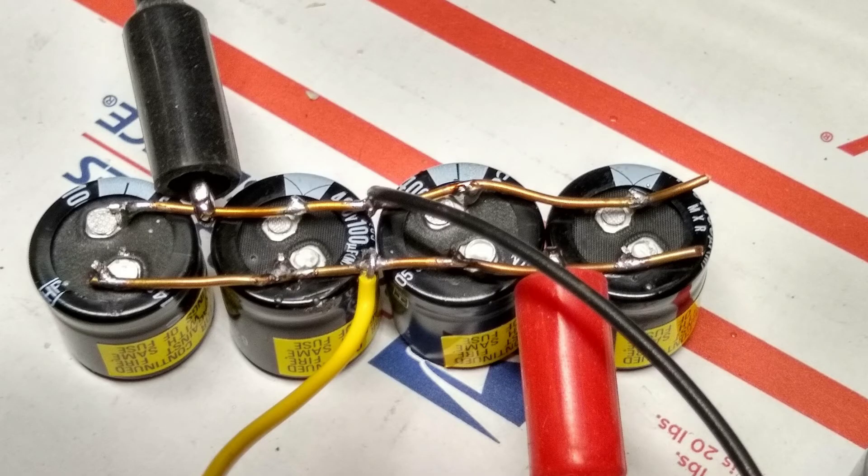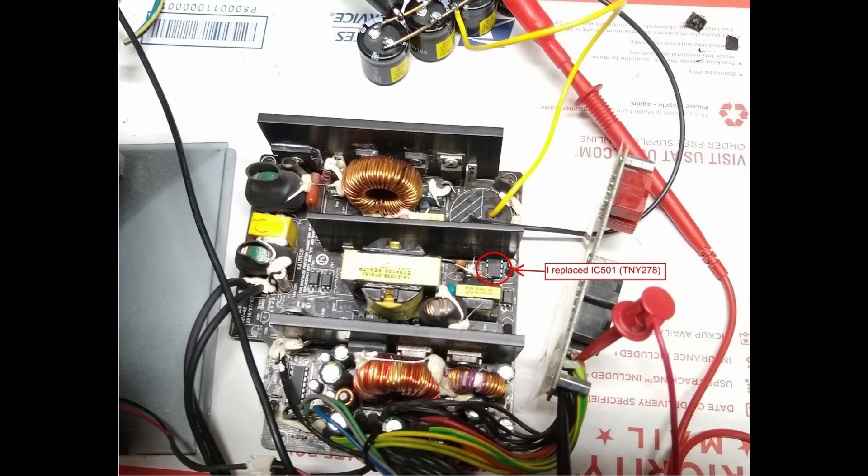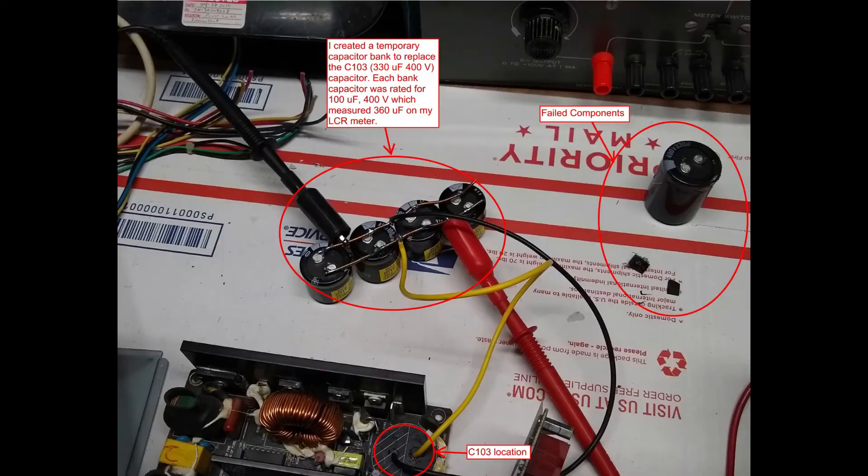Instead, I took four 100uF capacitors that I already have in my component inventory and wired them in parallel to form a capacitor bank. I verified my capacitor bank by measuring it with my LCR meter. The capacitor bank gave a reading of 360uF. Next, I installed IC501 and the temporary capacitor bank.